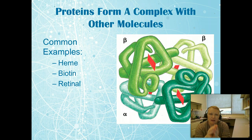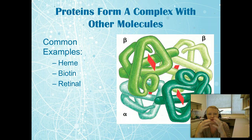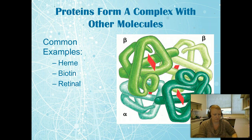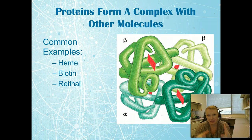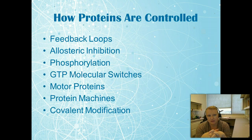Before moving to protein control, it's important to mention that proteins can form complexes with other molecules — not just protein-protein interactions, but also with inorganic molecules, carbohydrates, and lipids. A common example is heme combined with hemoglobin, which allows the hemoglobin molecule to carry oxygen. It's the actual heme that binds the oxygen.